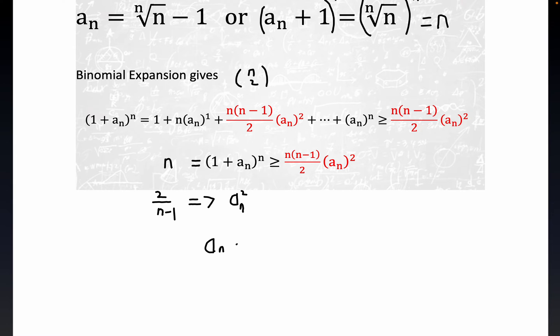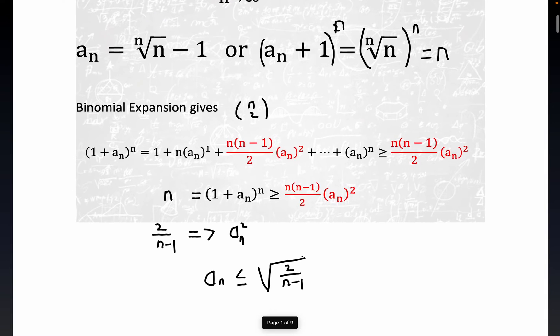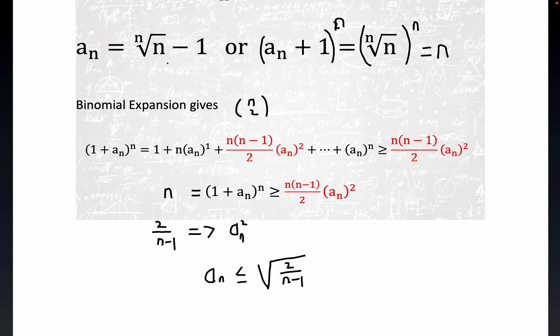This is the more conventional way to write this: a sub n is less than or equal to the square root of 2 over n minus 1. But notice here that our a sub n is this object right here.